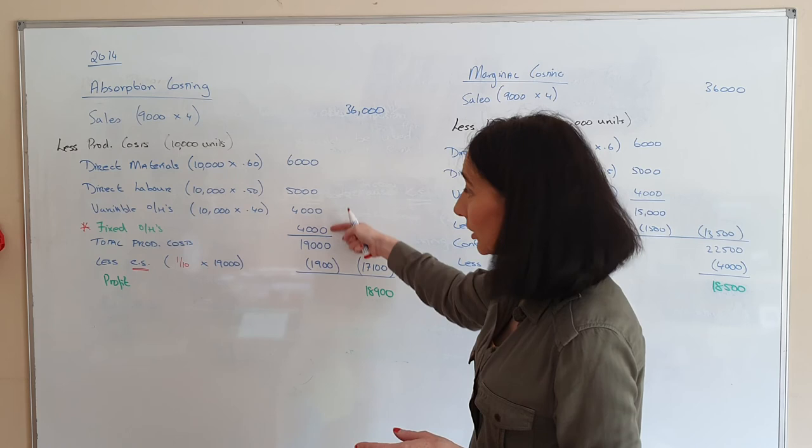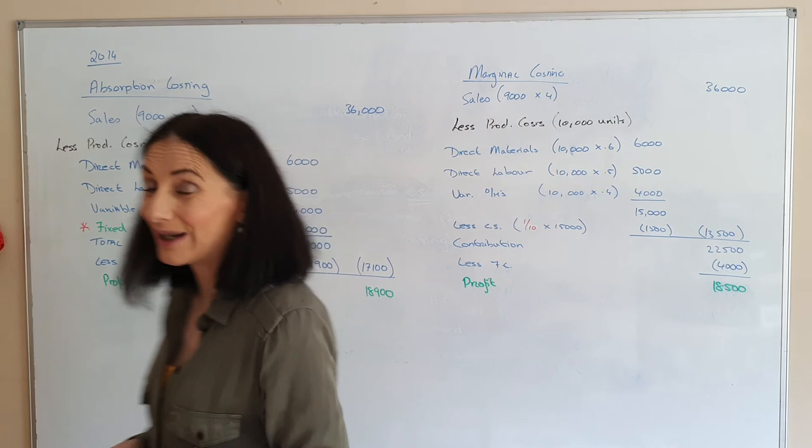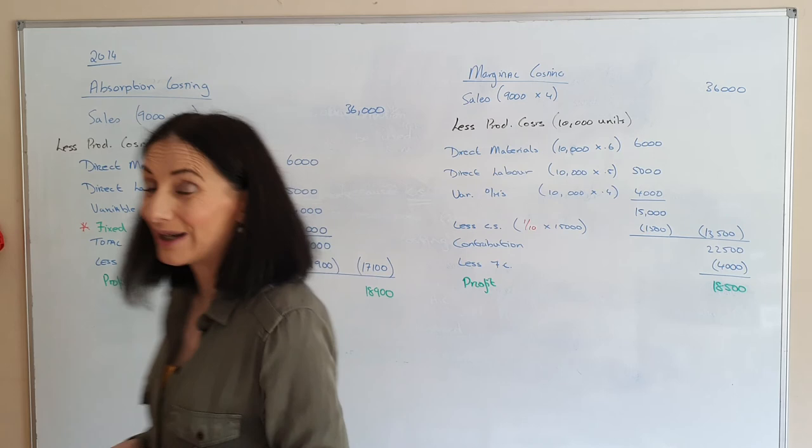Watch that and revise it again alongside your flexible budgets — I think it was question five in your flexible budgets. That's the 2014 part B marginal costing question.